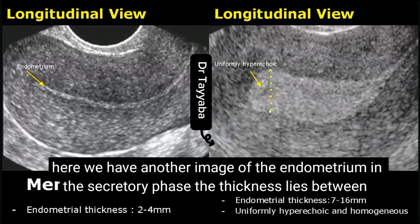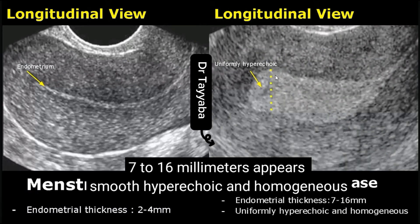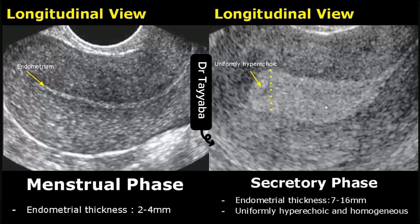Here we have another image of the endometrium in the secretory phase. The thickness lies between 7–16 mm and it appears smooth, hyperechoic, and homogeneous.